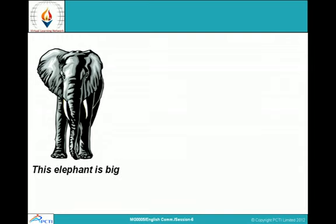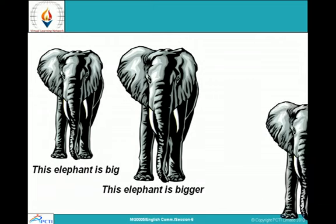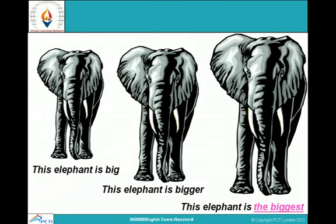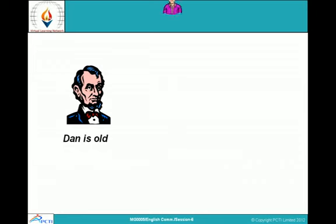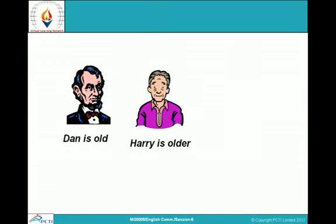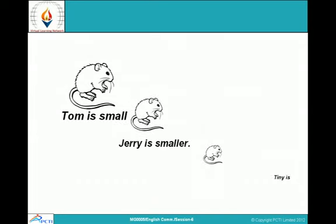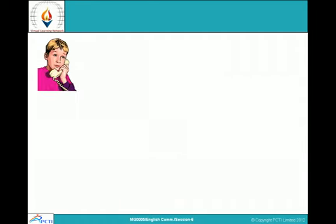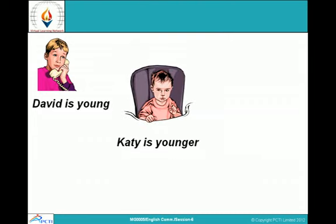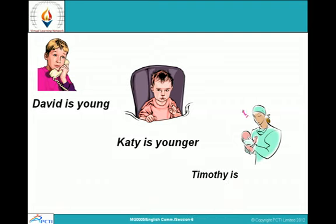This elephant is big. This elephant is bigger. This elephant is the biggest. Dan is old, Honey is old, Harry is older, but Bob is the oldest. David is young, Katie is younger, and a newborn baby Timothy is the youngest.